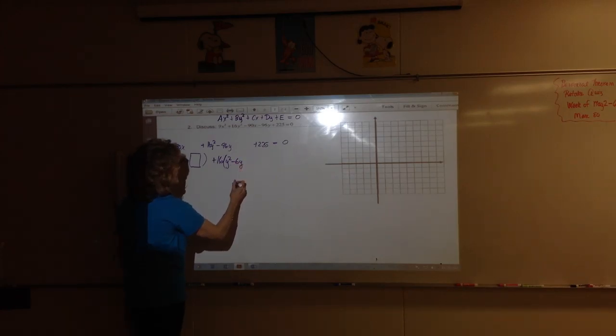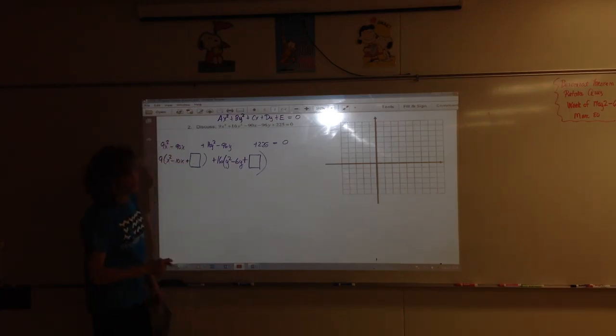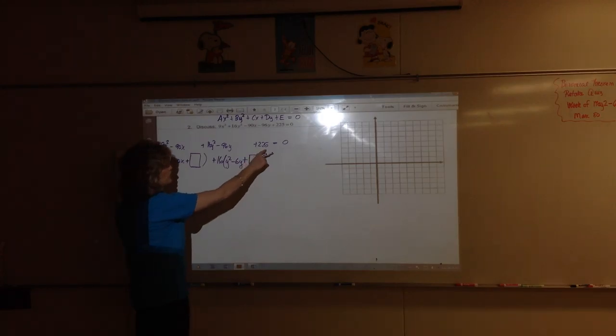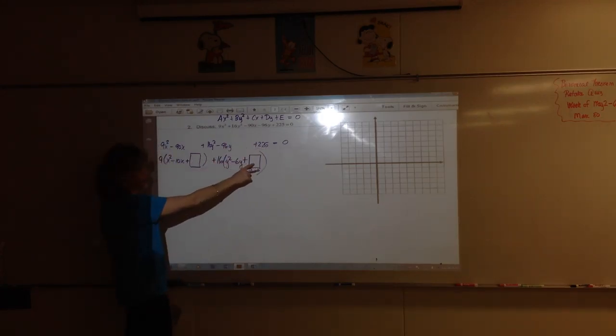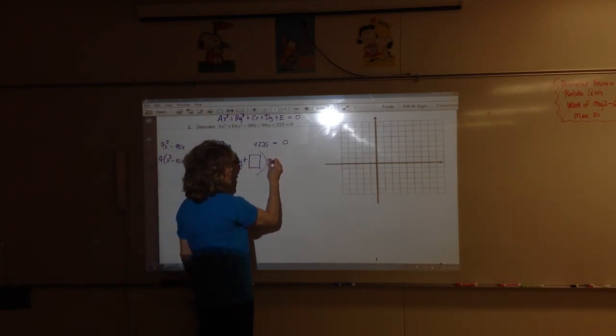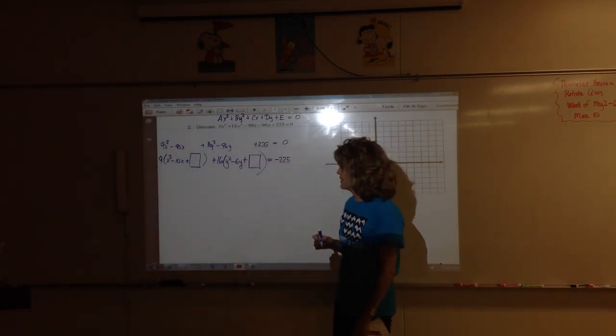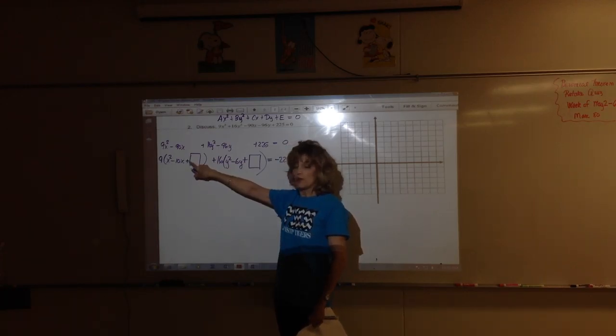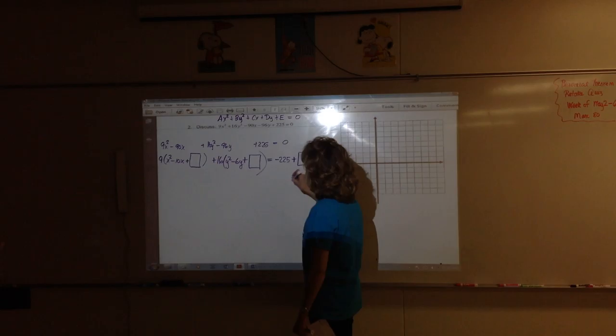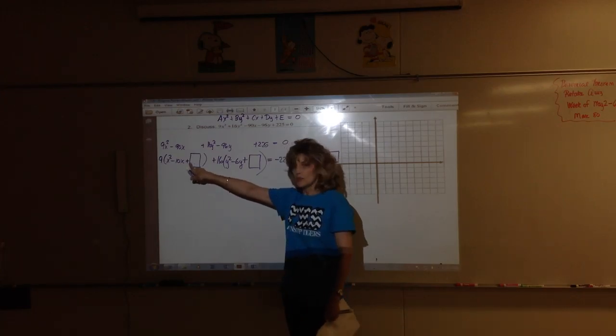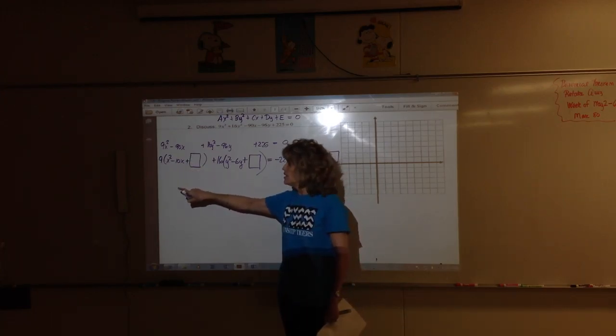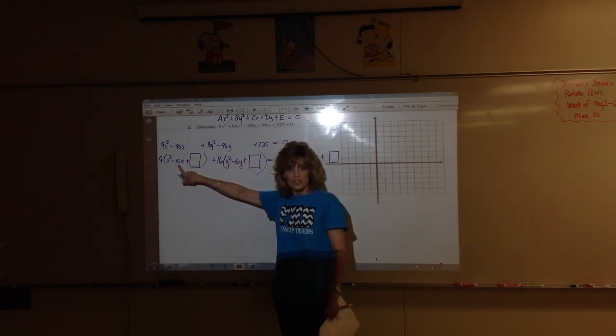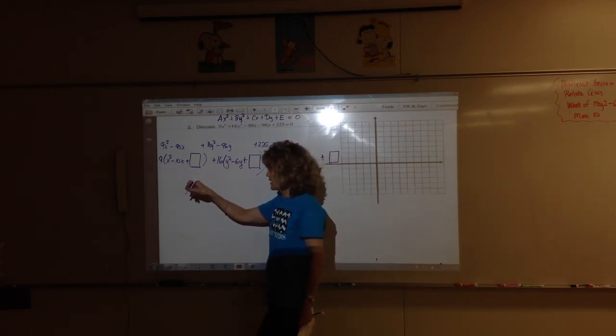If you remember from when we completed the square long ago, the first thing you have to have is a leading coefficient of one. So I need to factor out a common nine, that will leave us X squared minus 10X. And we're going to have to add just the right thing in order to make this become a perfect square trinomial. If I factor out a positive 16, that will leave me Y squared minus 6Y. I'm going to subtract 225 and make it move to the other side.